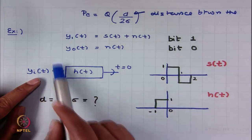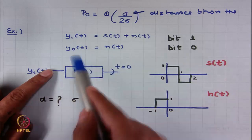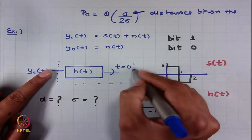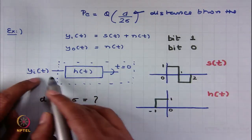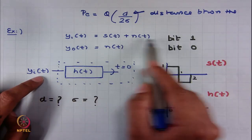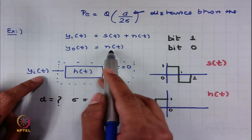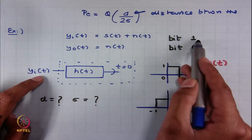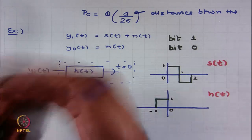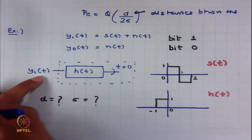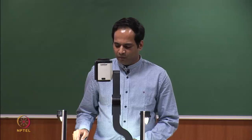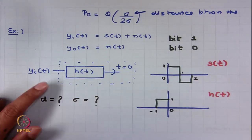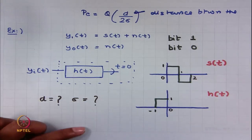y(t) is the received signal at the input of a matched filter, or at the input of a filter with impulse response h(t) followed by a sampler. This is the receiver we are using — we have seen that this is the most optimal receiver. So yᵢ(t) = s(t) + n(t) if bit 1 is transmitted, and if bit 0 is transmitted, we just have the noise waveform. This is an example of unipolar signaling.